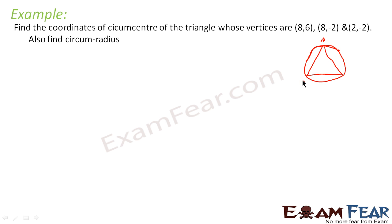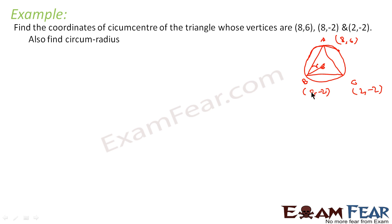The vertices are A = (8,6), B = (8,−2), and C = (2,−2). Let the circumcenter be O = (X, Y). We know OA = OB = OC, so OA² = OB² = OC². OA² = (X−8)² + (Y−6)², OB² = (X−8)² + (Y+2)², and OC² = (X−2)² + (Y+2)².